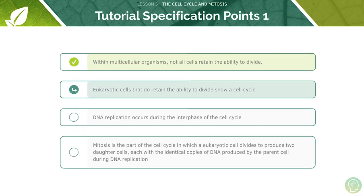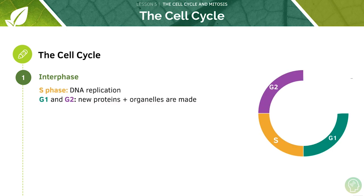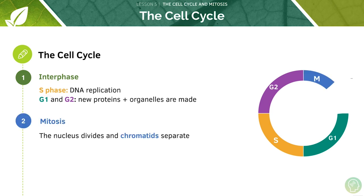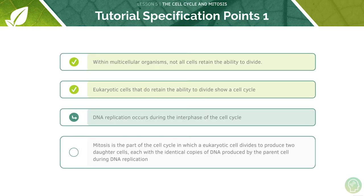Now let's look at eukaryotic cells. The cell cycle refers to the sequence of events occurring during cell division, while one parent cell divides to form two genetically identical daughter cells. We can break this process down into three phases. The first is interphase, in which DNA replication occurs and G1 and G2 where new proteins and organelles are made. We then get the division of the nucleus and separation of chromatids in mitosis. Finally we have cytokinesis as the cytoplasm divides.